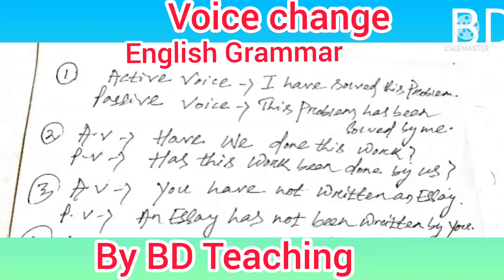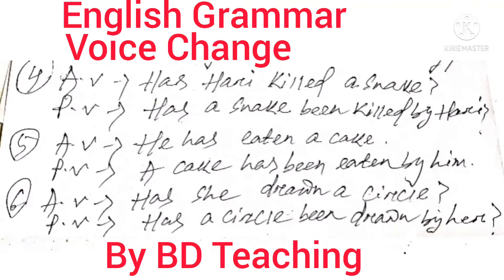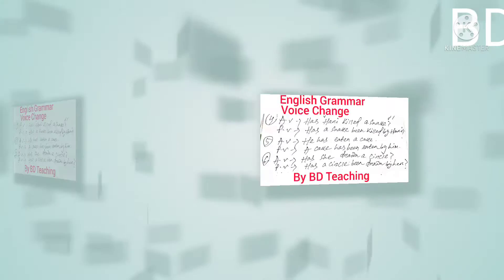In this way we can change from active voice to passive voice for present perfect tense, for different sentences like affirmative, negative, and also interrogative in English grammar. Similarly, example four.